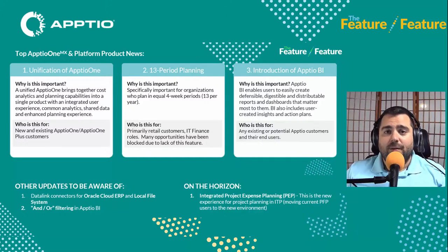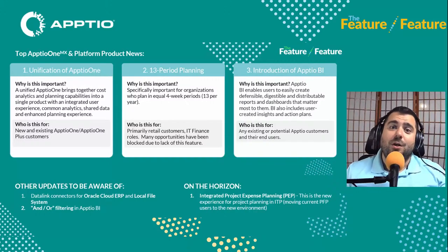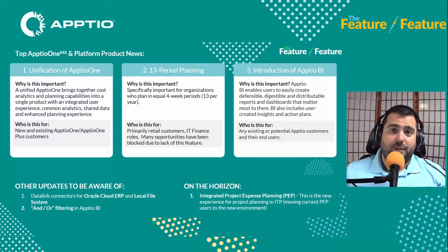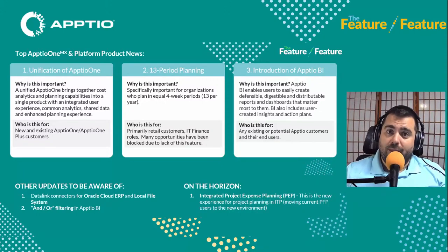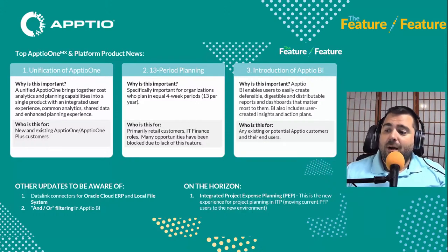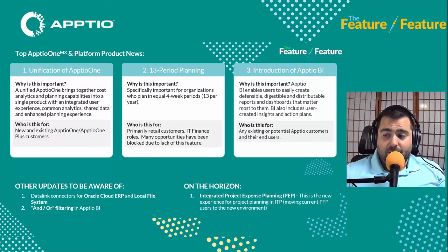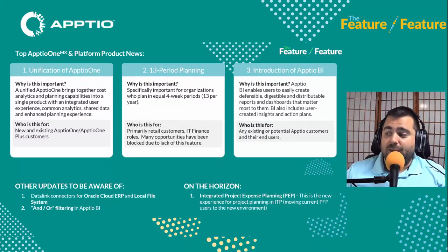Aptio BI also includes the ability to set thresholds for notifications — so for certain reports, if the numbers go too high or too low you can get notifications. You can have notifications go out to stakeholders themselves as reminders to check those reports. There are also task management capabilities — small project management features built into the reporting interface to remind people of different tasks, like analyzing certain reports on a regular cadence. If you want to see a demo, episodes two and three from last month are available on YouTube. There are also data link connectors for Oracle Cloud ERP, and AND/OR filtering has been added into Aptio BI as well.